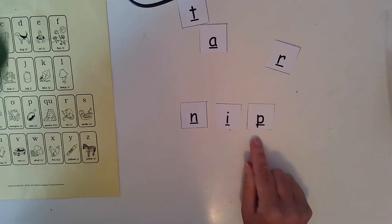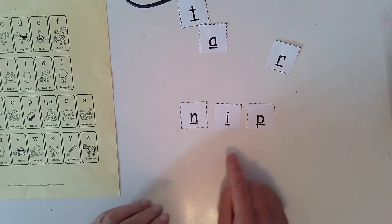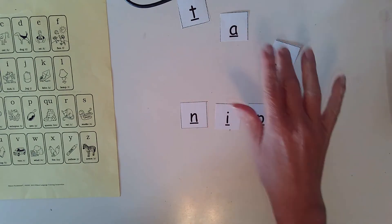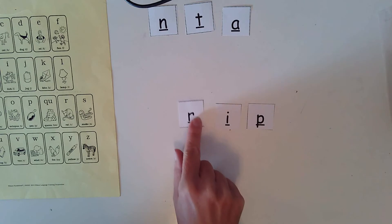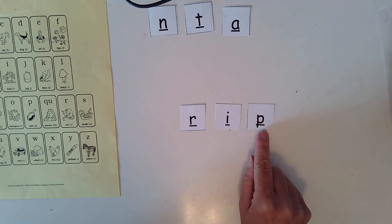And the last letter we're going to change is we are going to change our beginning, our first letter. We're going to change the N to an R. So now we have r-i-p. What word did we make? Rip.